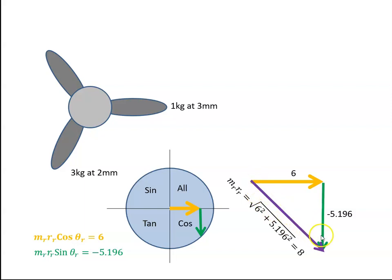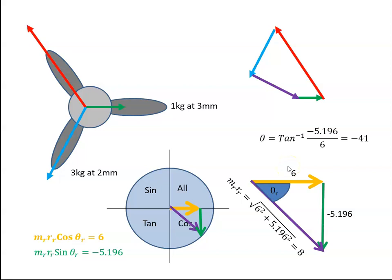Then my resultant is a right angle triangle. So the square of the hypotenuse is equal to the sum of the squares on the other two sides. So the resultant MR is equal to the square root of six squared plus 5.196 squared, and that works out to be eight. So the angle then is the inverse tan of opposite over adjacent, which is minus 5.196 over six. The inverse tan of that works out to be minus 41 degrees. So that angle there is 41 degrees.